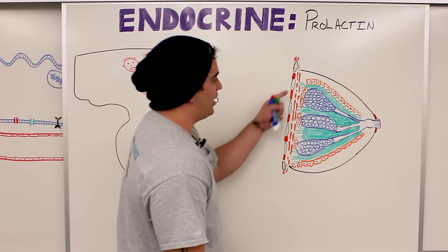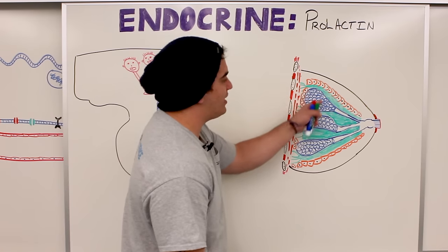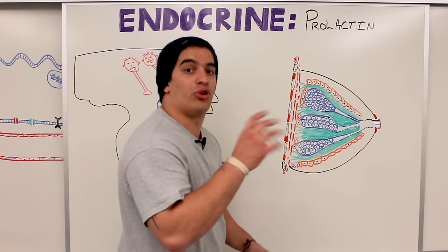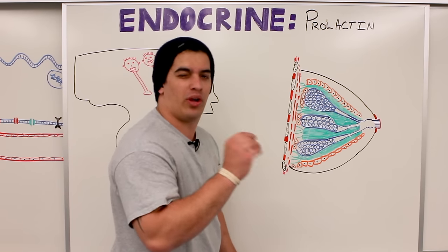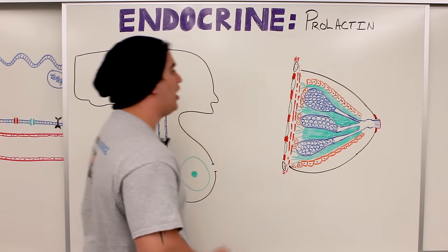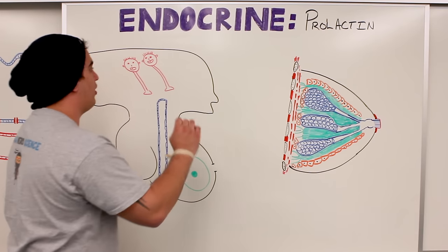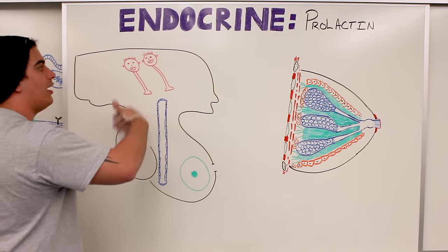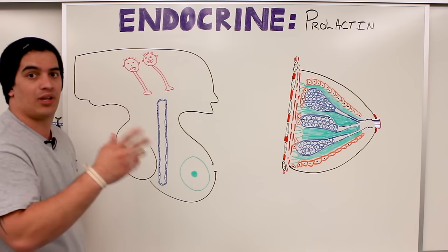So that's our mammary gland. What does prolactin do? It's going to stimulate these alveolar glands to start producing milk. Before we do that, let's look at what the actual stimuli and inhibiting factors for prolactin are.